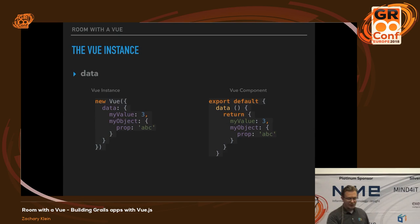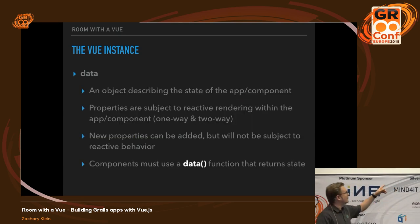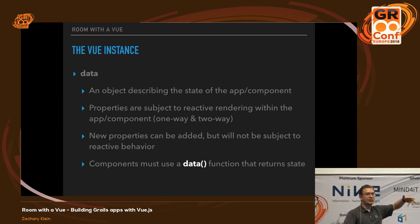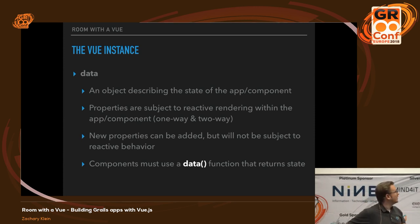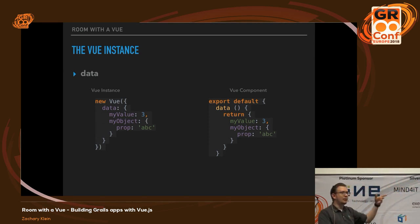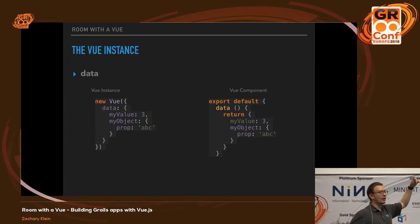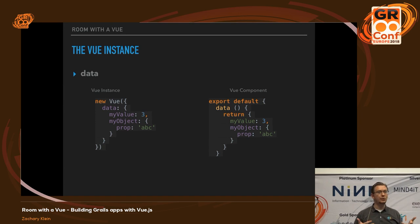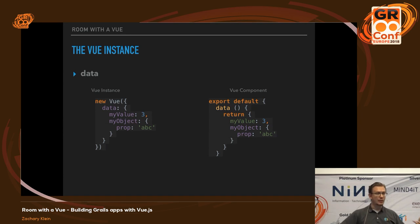One more thing about the data object: you can add properties to your data object after the application is started, however they will not be subject to the re-rendering process. So you really want to make sure that when you create a component or instance, all of the properties you intend to use are already there — even if they're just set to null or empty string. You need them there at the time when the component is created.